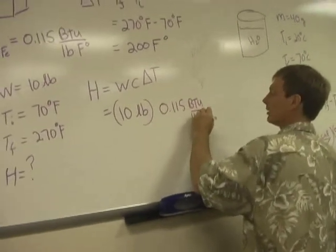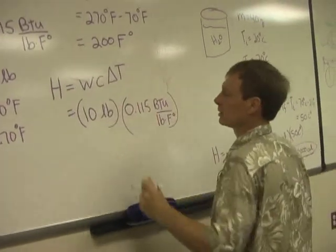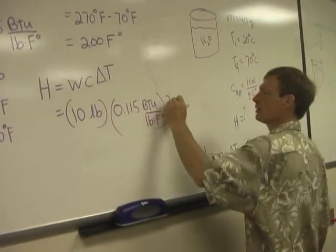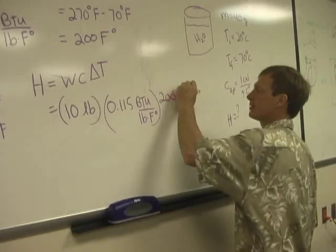Which is 10 pounds times 0.115 British thermal units per pound per Fahrenheit degree, times the temperature difference of 200 Fahrenheit degrees.